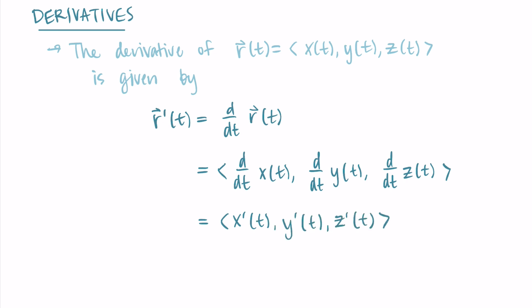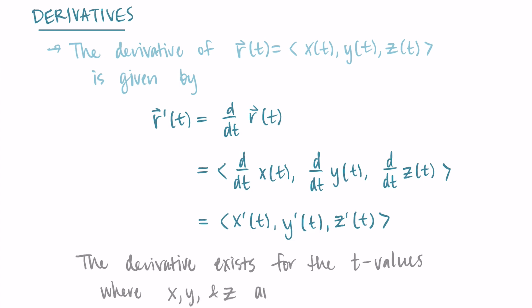We could go through the complicated limit definitions for why this works, but that's not especially illuminating. You can trust that it works the way you'd want it to. We have functions in x, y, and z, and as long as their derivatives exist — meaning the t values correspond to x, y, and z values where we're differentiable — we can take the derivative. For our purposes, just trust that you can take the derivative of each component and it'll work correctly.